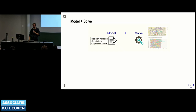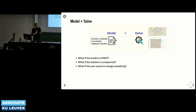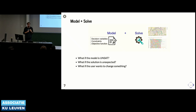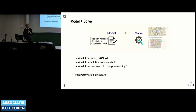Now imagine you've created a constraint specification model and you call the solver. What if the model is unsatisfiable—what if the solver provides no answer other than that there exists no solution? Or what if it returns a solution, like a routing, but it's unexpected or contains elements you don't want? Or what if you want to change some part of that answer or even the specification? These questions are becoming more important within the concept of trustworthy and explainable AI.